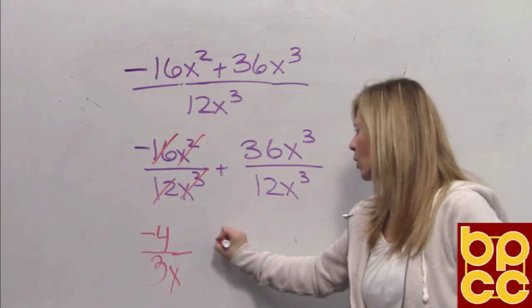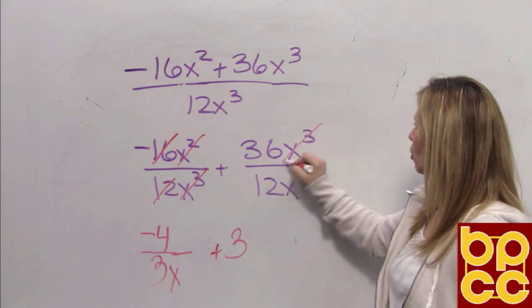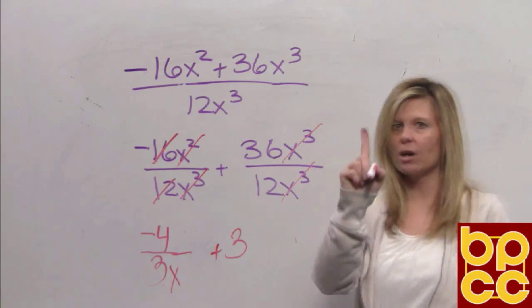36 divided by 12 divides nicely. That's 3. x cubed divided by x cubed is going to cross out. It makes the number 1.